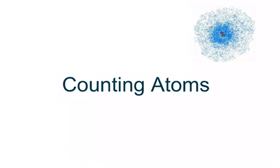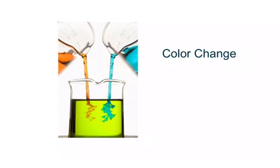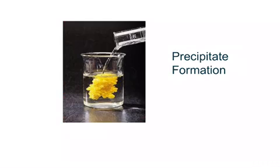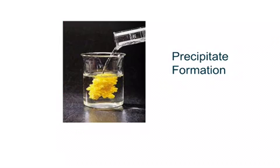You also learned in Part 1 that there are common clues that indicate the formation of new substances. They include color change, gas production, temperature change, and precipitate formation.